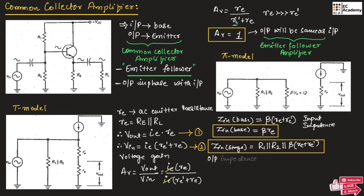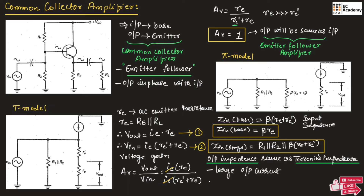Here, the output impedance will be the same as Thevenin's impedance. Even though the output voltage is the same as input voltage, the emitter follower can produce large output current and also it has low output impedance. These are the advantages of emitter follower amplifier. Since it is producing large output current, the emitter follower is a current amplifier or power amplifier — it is not a voltage amplifier.